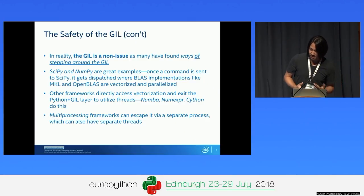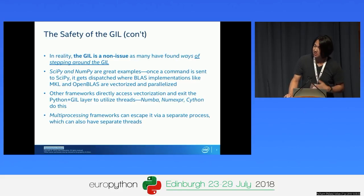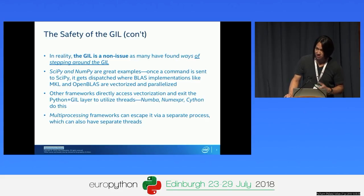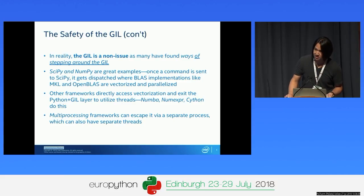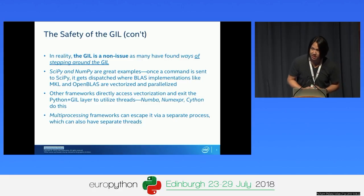Because the GIL provides safety and we have so many good frameworks, it's kind of a non-issue today. There are many frameworks that have found a way to cleanly step around the GIL. SciPy and NumPy are great examples—you basically send a command for something like numpy.dot, it gets dispatched to your BLAS API, and you can use Intel's Math Kernel Library or OpenBLAS depending on your implementation. That gets vectorized and parallelized inside the CPU and dispatched completely transparently.